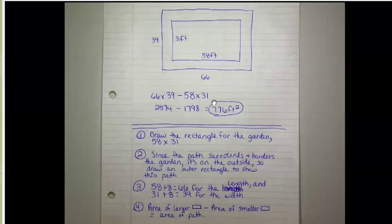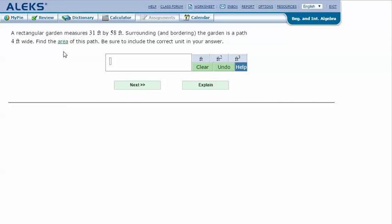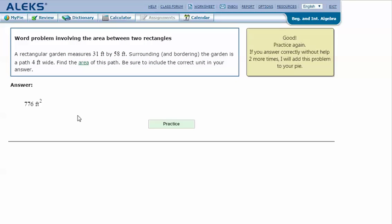2574 minus 1798 gives us an area for our path of 776 feet squared. In my ALEKS screen, type in the answer that I got in my notes, 776 feet squared, and click next. And it says that I got the correct answer. Thanks for watching.